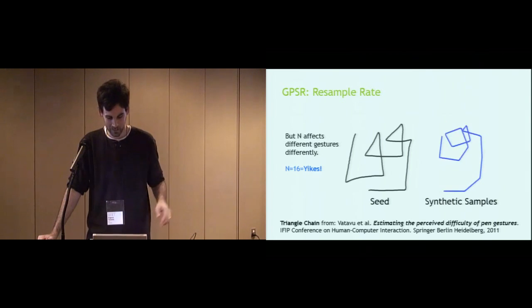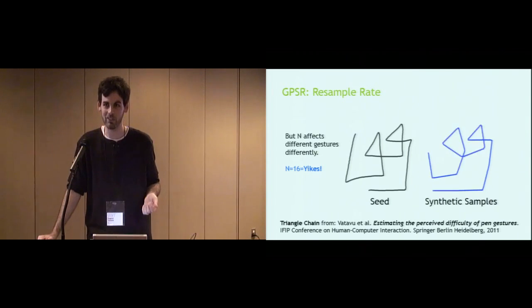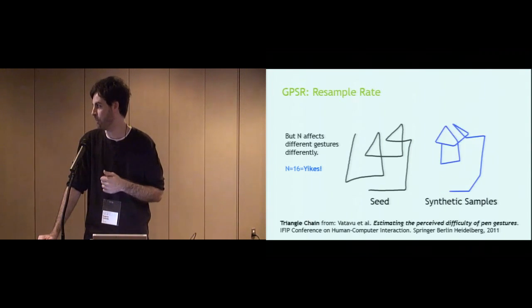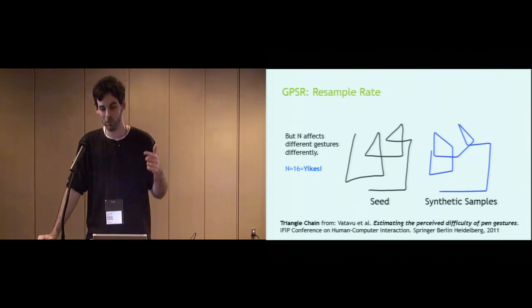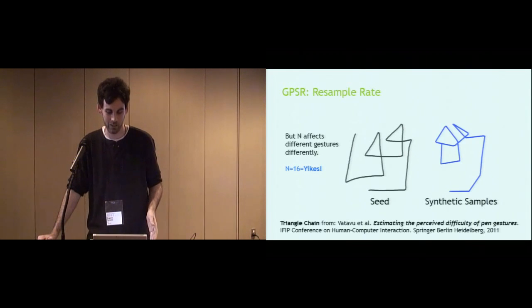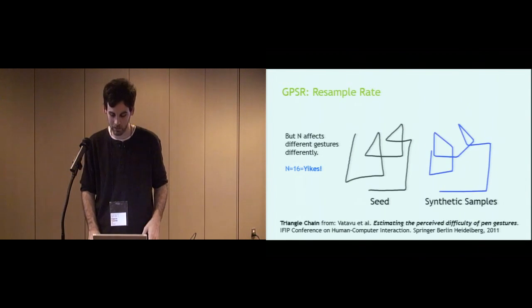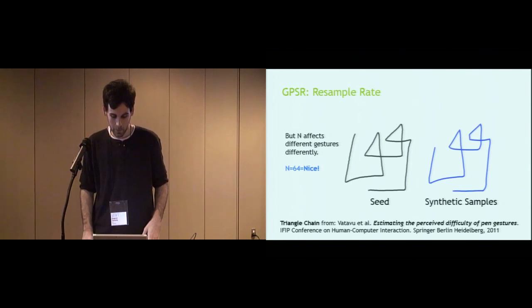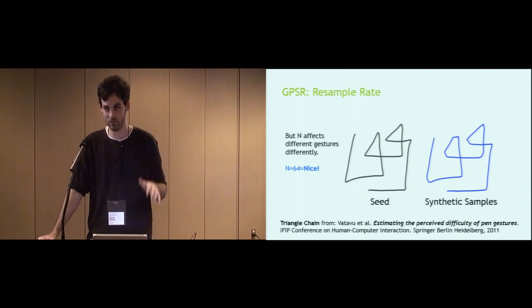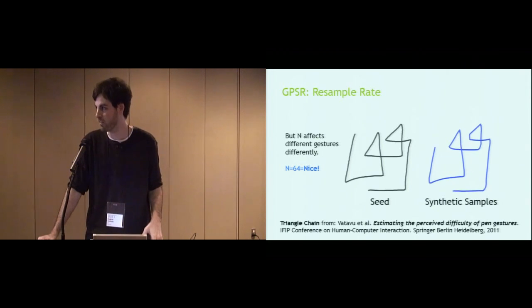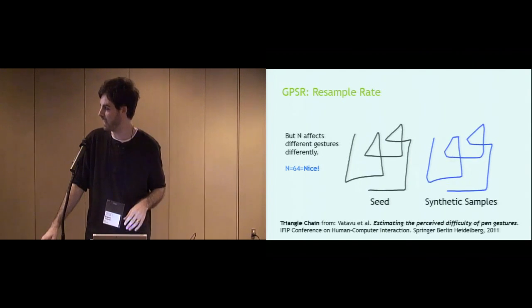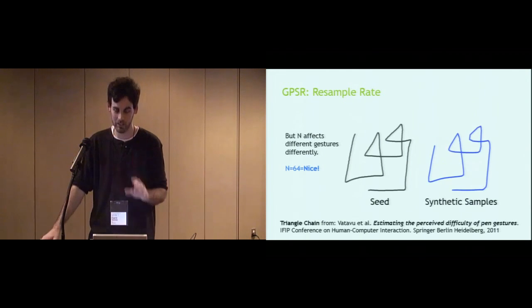On the other hand, if we look at the triangle chain, and we resampled N equals 16 points, we get very terrible results. A lot of degenerate cases. And if we were to train a recognizer with this particular distribution, we would run the risk of degrading performance as some of these samples may cross into the territory of other samples. It really depends on the vocabulary. Now we go back up to N equals 64. We have a fairly nice distribution. All of the samples recognizable. Unlike the right curly brace, it's not too strict. We have a lot of variability in there. And like I already said, they're all recognizable. So this would be very good to train with.